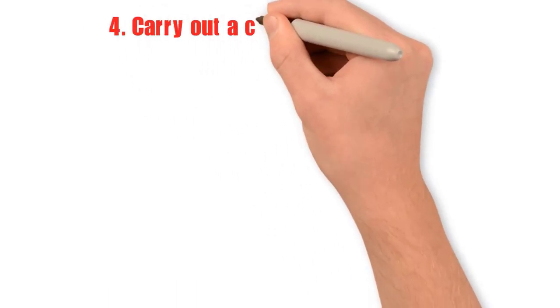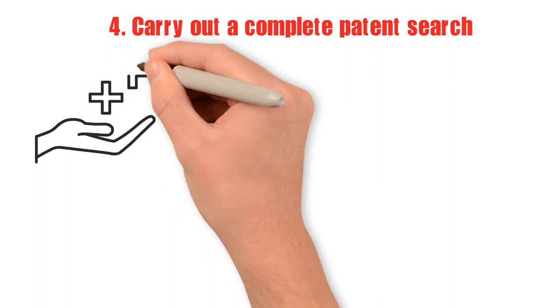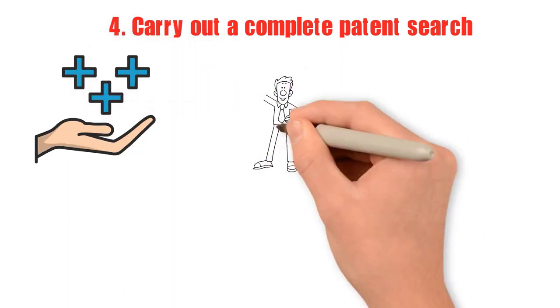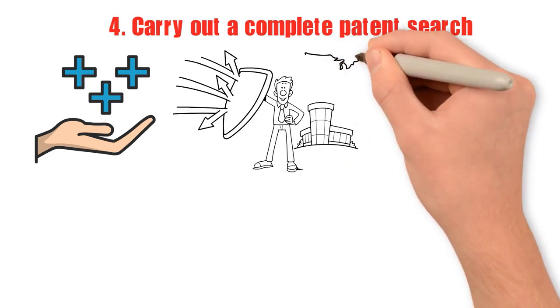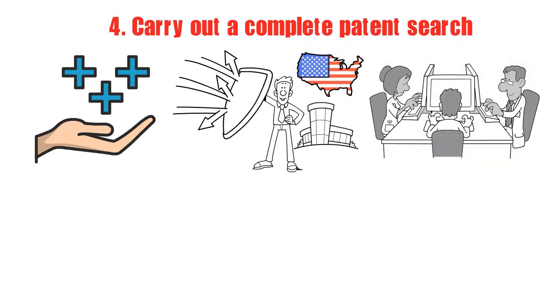4. Carry out a complete patent search. You must look into all prior advances in your sector to ensure your innovation is novel. This entails looking out for relevant inventions in the U.S. and perhaps international patents, as well as other sources like scientific and technical journals.